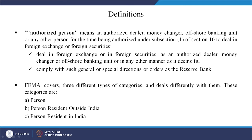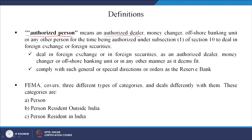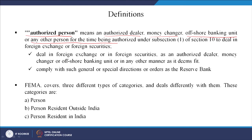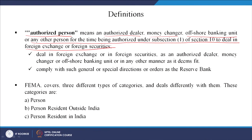Who is an authorized person? Authorized person means an authorized dealer, money changer, offshore banking unit, or any person authorized under subsection 1 of Section 10 to deal in foreign exchange or foreign securities. The government has given permission to few people - they are the authorized ones who deal in foreign exchange or foreign securities as an authorized dealer, money changer, or offshore banking unit.